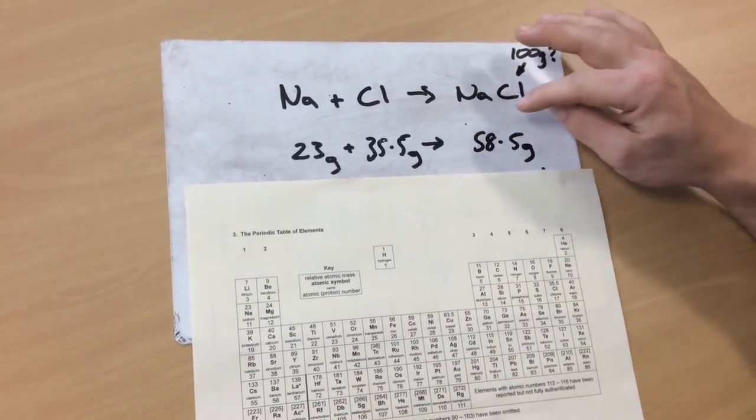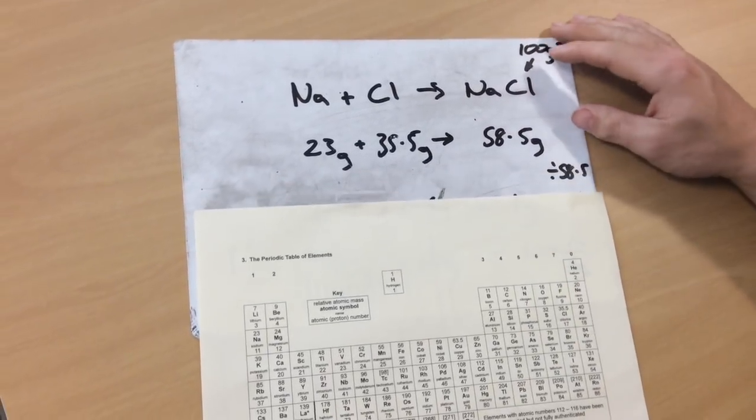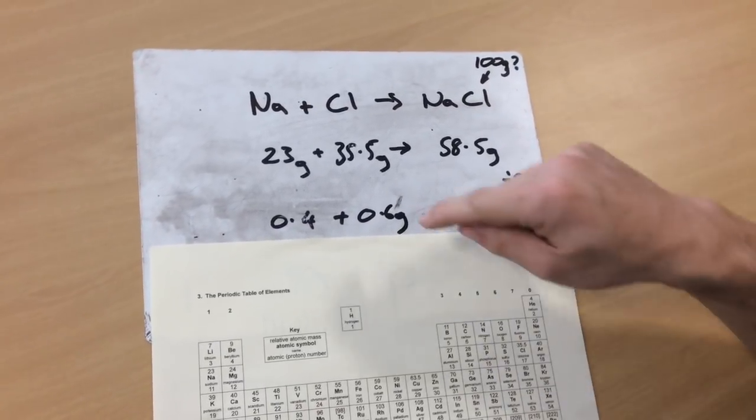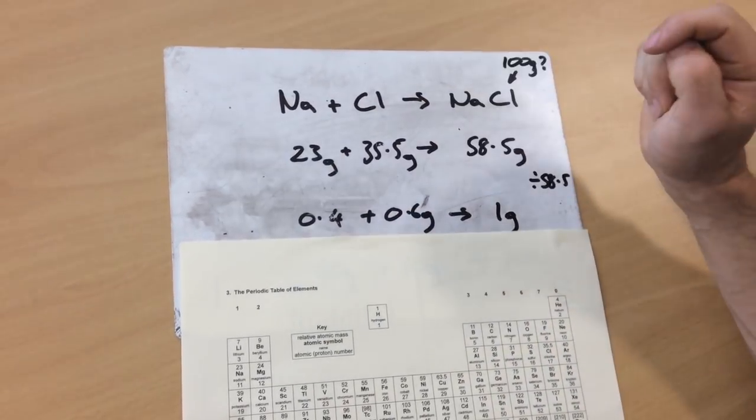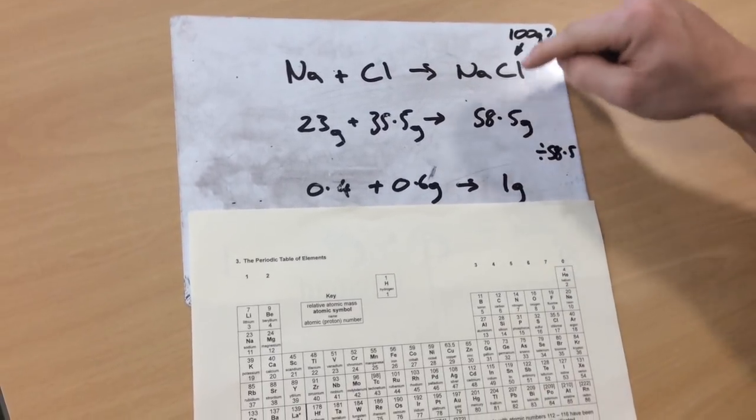I do exactly the same thing. I divide it by this number, 58.5, to work out how much I need for one gram. So I've divided it by 58.5, and that tells me that I need 0.4 grams of sodium. I need 0.6 grams of chlorine to produce one gram of sodium chloride.